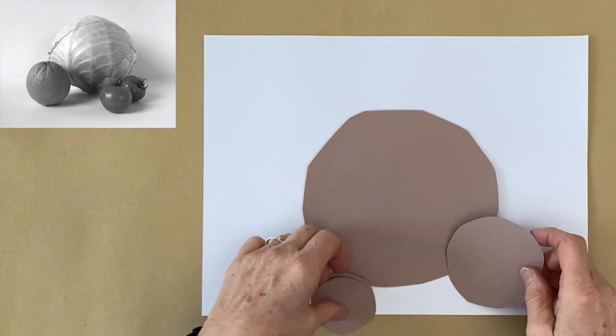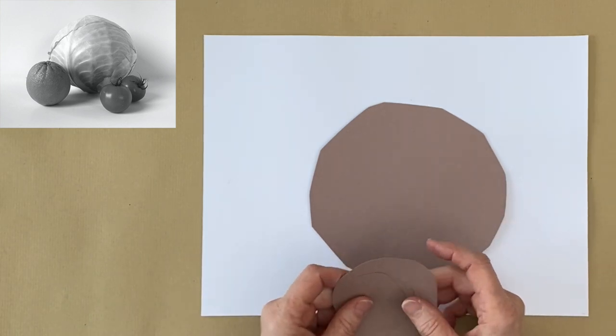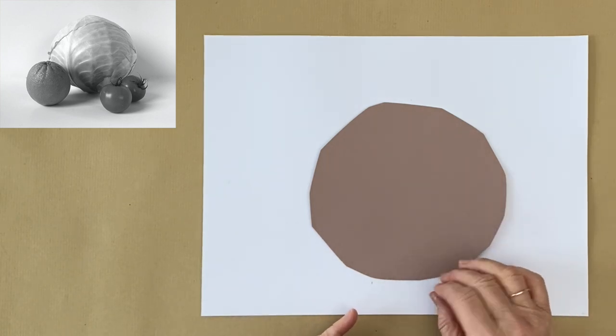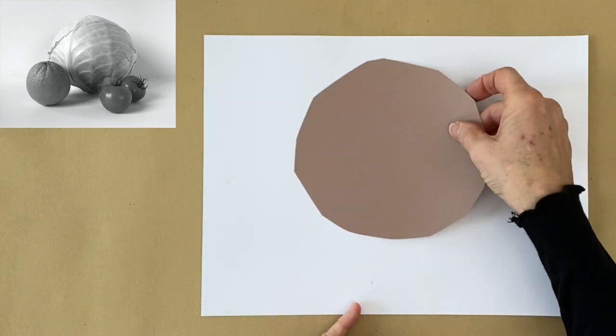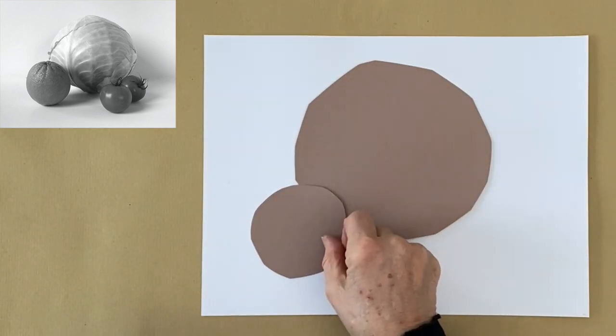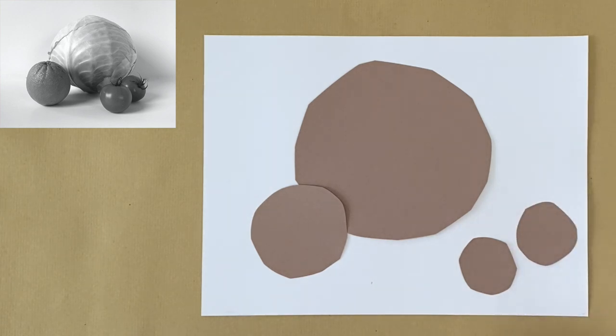They draw the biggest object. Add the others. And all of a sudden they realize that they don't have enough space. Because they started out all wrong. So if you think you might have difficulties with the composition. Do yourself a favor. And cut out the shapes of your fruit or your vegetables. And then try the composition first. Try the various positions you might want. How they look like. How you like it.